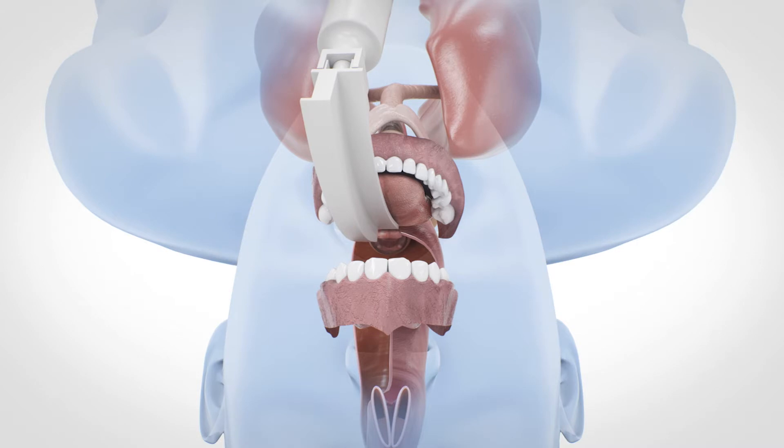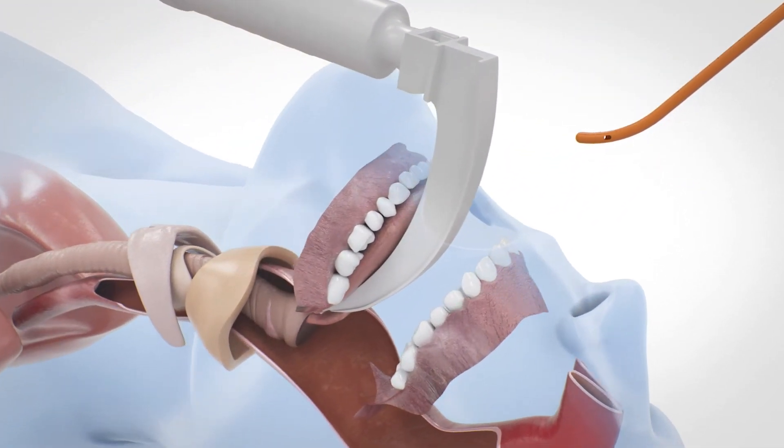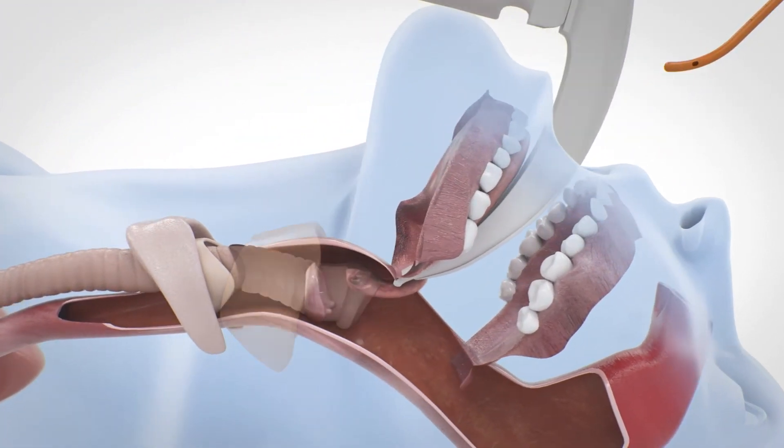If the glottis is visible, advance the EyeBougie through the vocal cords into the trachea between 2 and 3 cm.